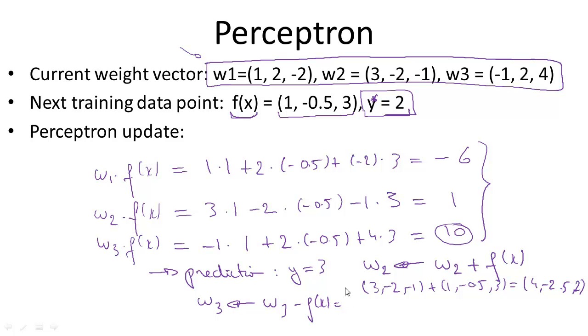So w3 gets updated by subtracting out f(x). We get that w3 now equals the old w3 (-1, 2, 4) minus f(x) (1, -0.5, 3), which gives us a new weight vector w3 equal to (-2, 2.5, 12).